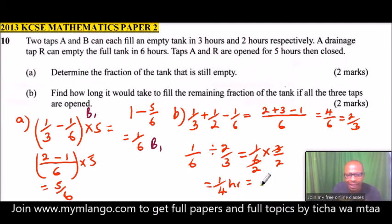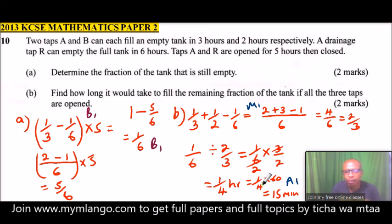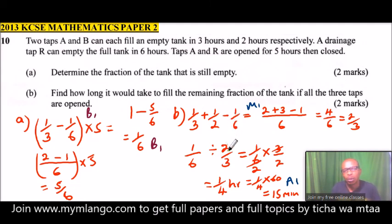One quarter of an hour is the same as a quarter of 60 minutes, which gives 15 minutes. So it will take 15 minutes to fill the remaining one sixth of the tank. You get one mark for the method and one mark for the answer, totaling four marks overall. Any question with this kind of information is solved this way. Join my online classes to cover much more. Thank you.